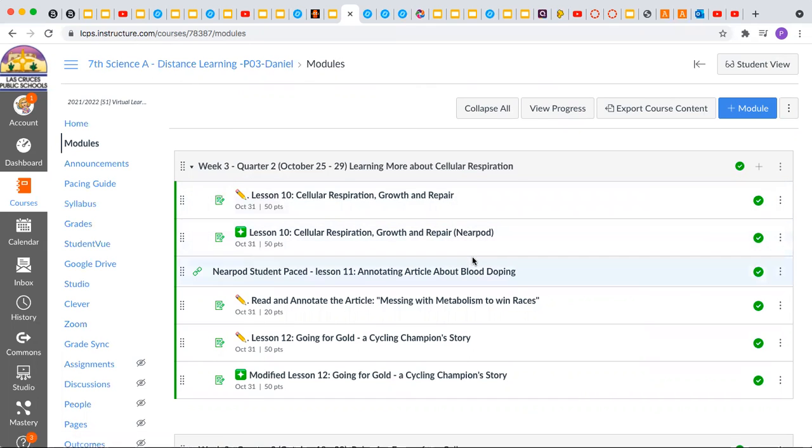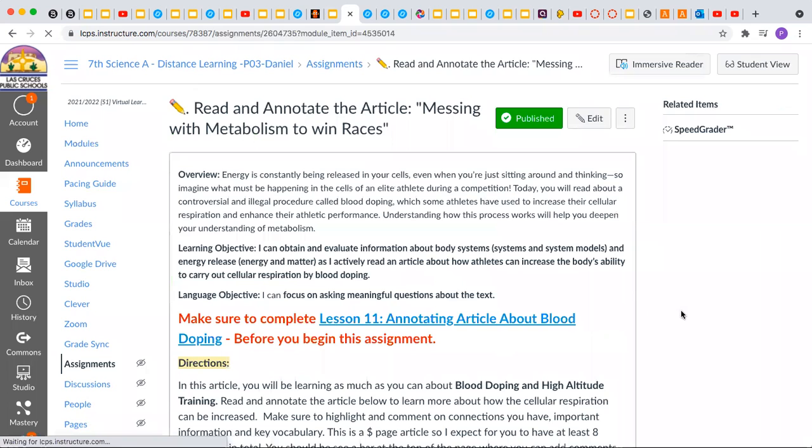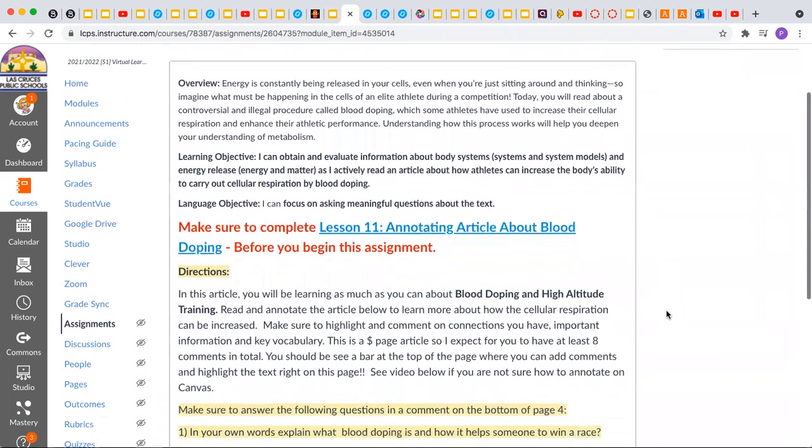We're also going to read an article, an interesting article about being able to mess with metabolism to win races. So we're going to read this article and annotate it. And I'm going to show you where we're doing it within the canvas again, and there will be a video as well as audios for this. Make sure that you do the Nearpod that gives you examples of the annotations before you read it.